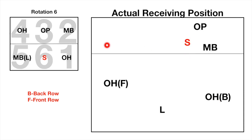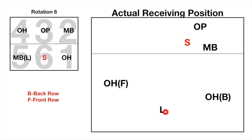Rotation six is very interesting and still confusing because the back row setter actually stands in the front row. This is acceptable because the back row setter only needs to stand behind the opposite spiker and between the middle blocker or libero from the back row and the outside hitter from the back row. So the setter standing in the front row is totally fine, and since the setter is not relative to the middle blocker, he can stand in front of the middle blocker.